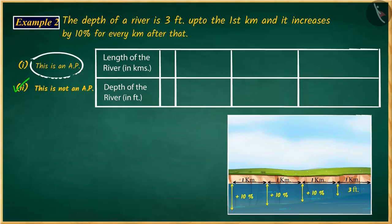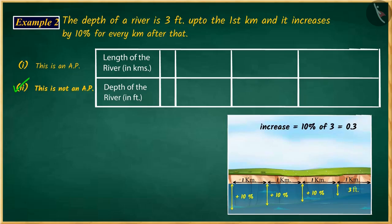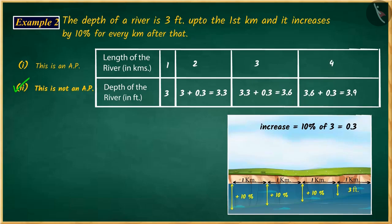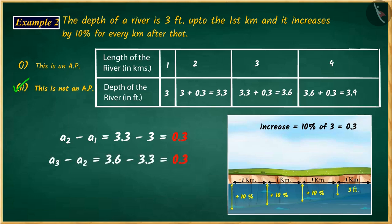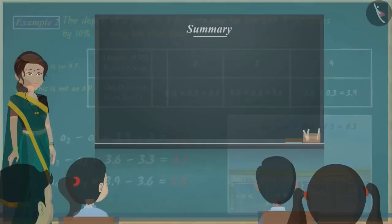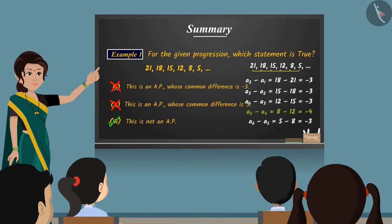If you chose the first option, it was a good try but incorrect. You considered the 10% increase in depth as a fixed number added to each term. Remember, the series obtained by adding a certain fixed number to each term is an arithmetic series. Because you considered 10% as a fixed number, you incorrectly identified the series as arithmetic. Teachers can check student understanding in class with the help of such examples.